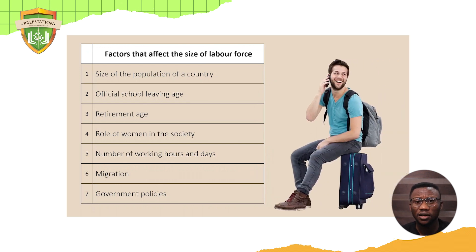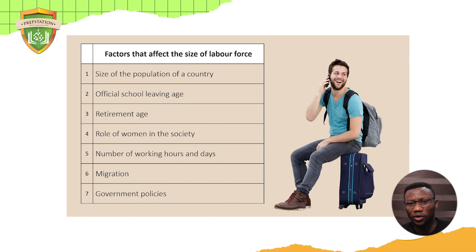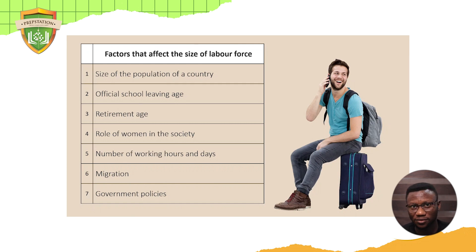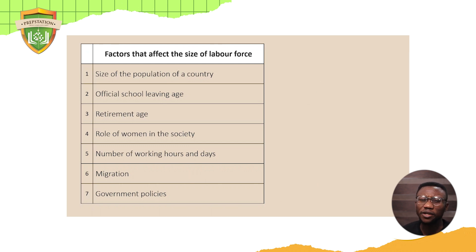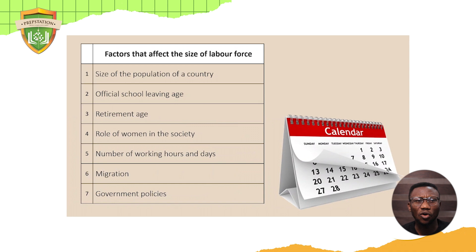Migration is also a factor. We have so many Nigerians leaving the country — the Japa syndrome — and going to other places. The more they go, the less our labor force. If skilled doctors, lawyers, and teachers are going to other countries for better living, our labor force is shrinking. Of course, foreigners are also coming to Nigeria to work and start businesses. But in a country like Nigeria, we have more people leaving than coming in, so migration is a very important factor affecting the size of the labor force.